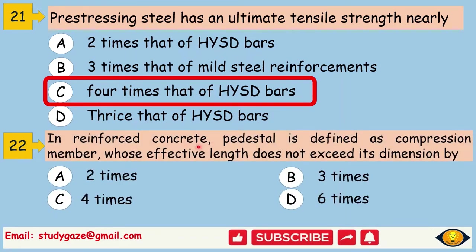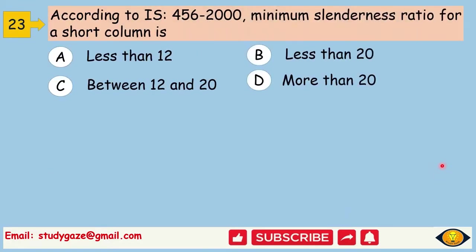In reinforced concrete, pedestal is defined as compression member whose effective length does not exceed its dimension by 3 times. According to IS 456-2000, minimum slenderness ratio for a short column is. Answer is less than 12.